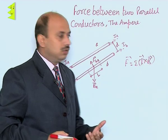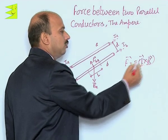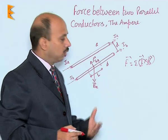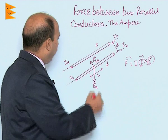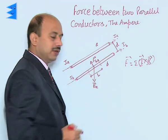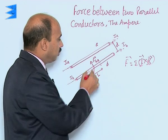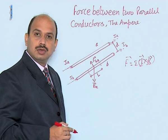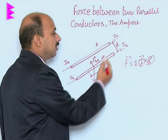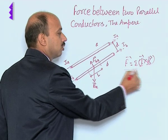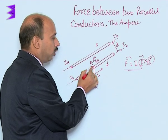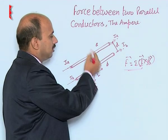Force is perpendicular to L and B. By using the cross product of the two vectors, we can find the direction of the force acting on each conductor. The magnetic field due to conductor A at the location of conductor B is directed into the plane of the paper. Using the right-hand cross product, we get the direction of force on B due to A is towards A.